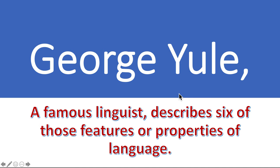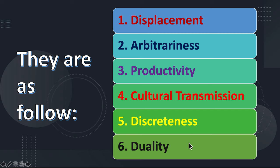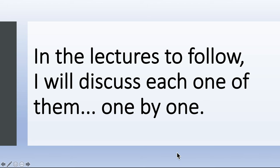George Yule, a famous linguist, describes six of those features or properties of language. They are as follows: displacement, arbitrariness, productivity, cultural transmission, discreteness, and duality.